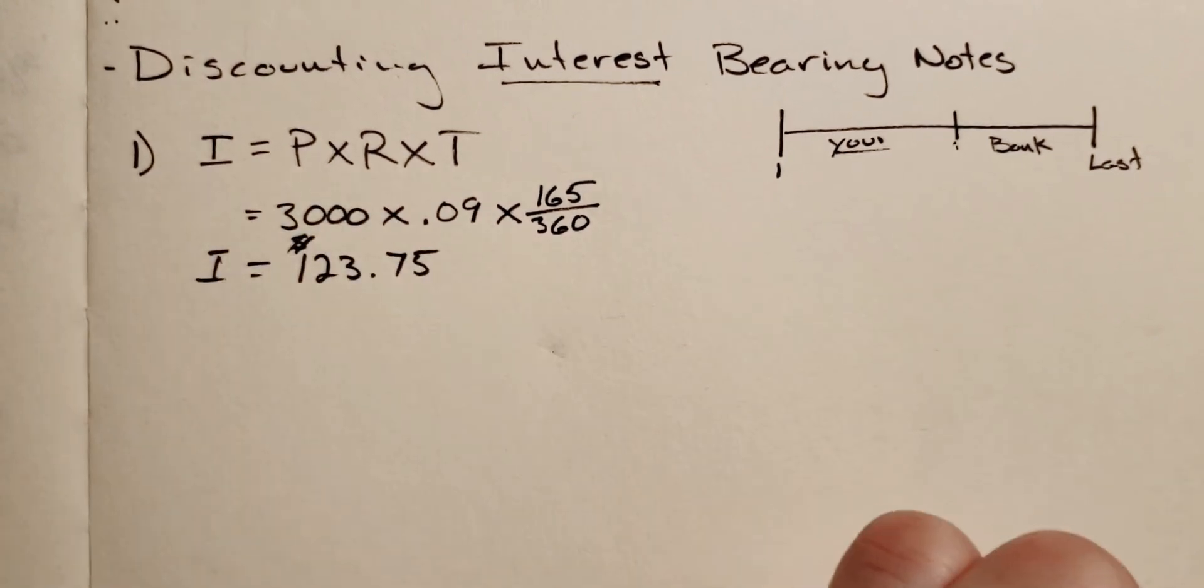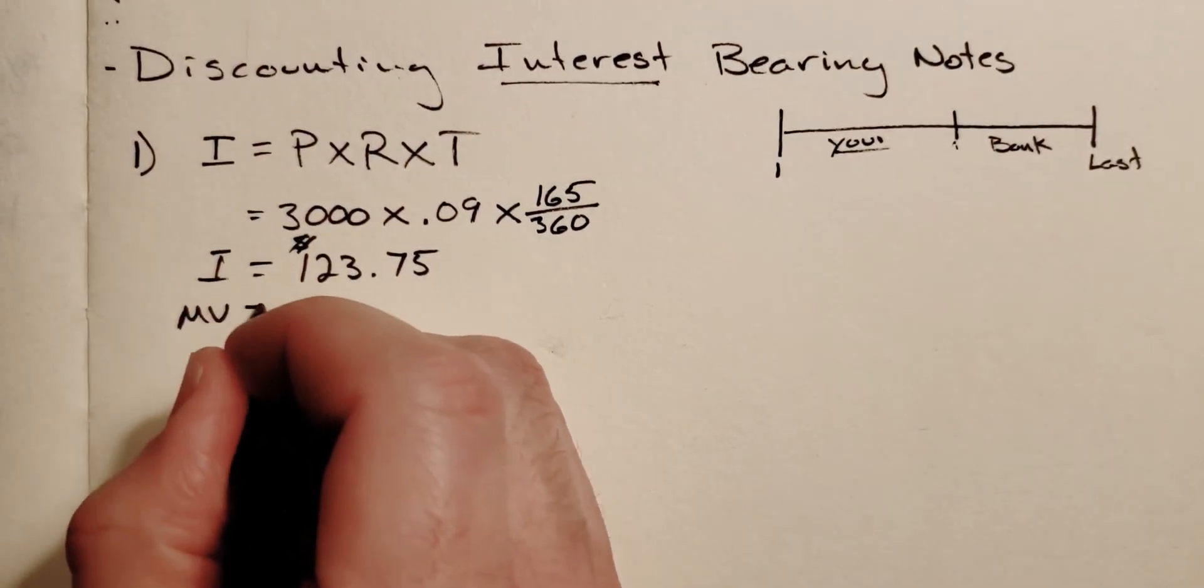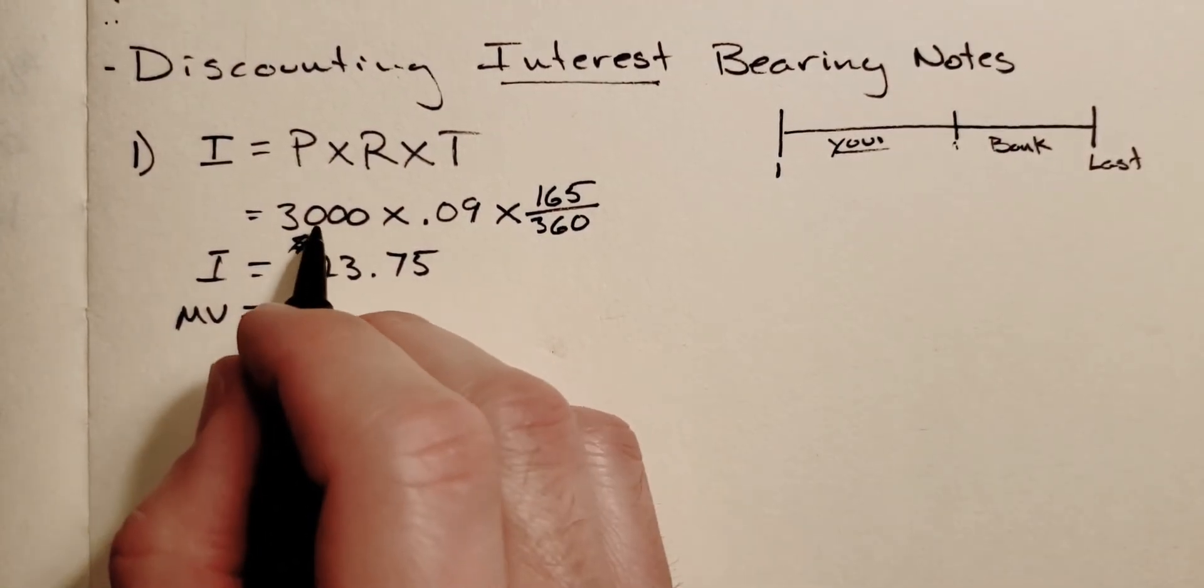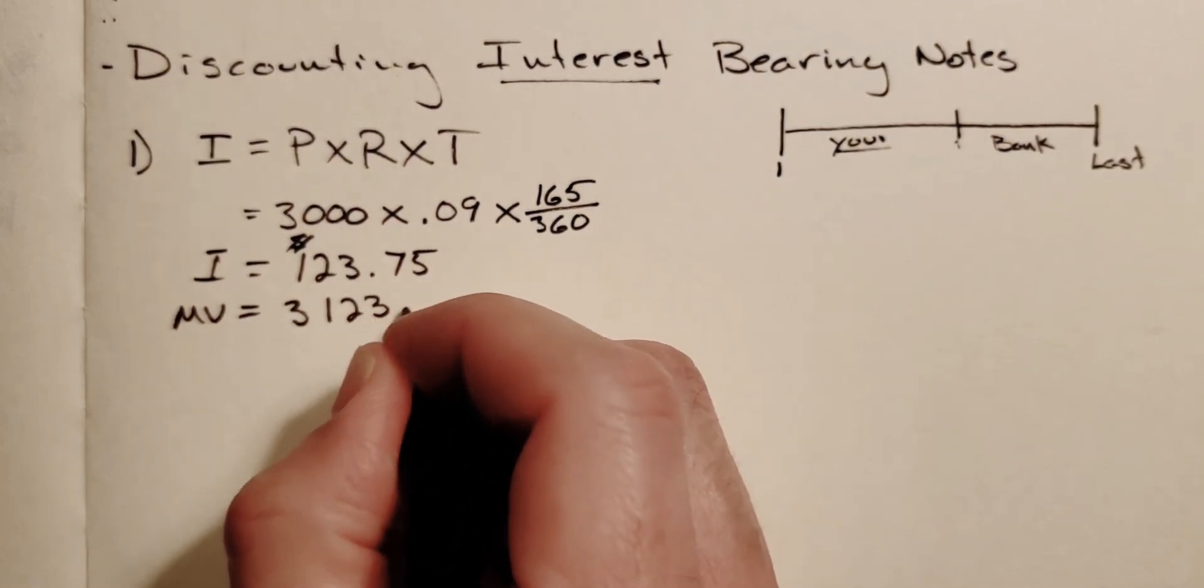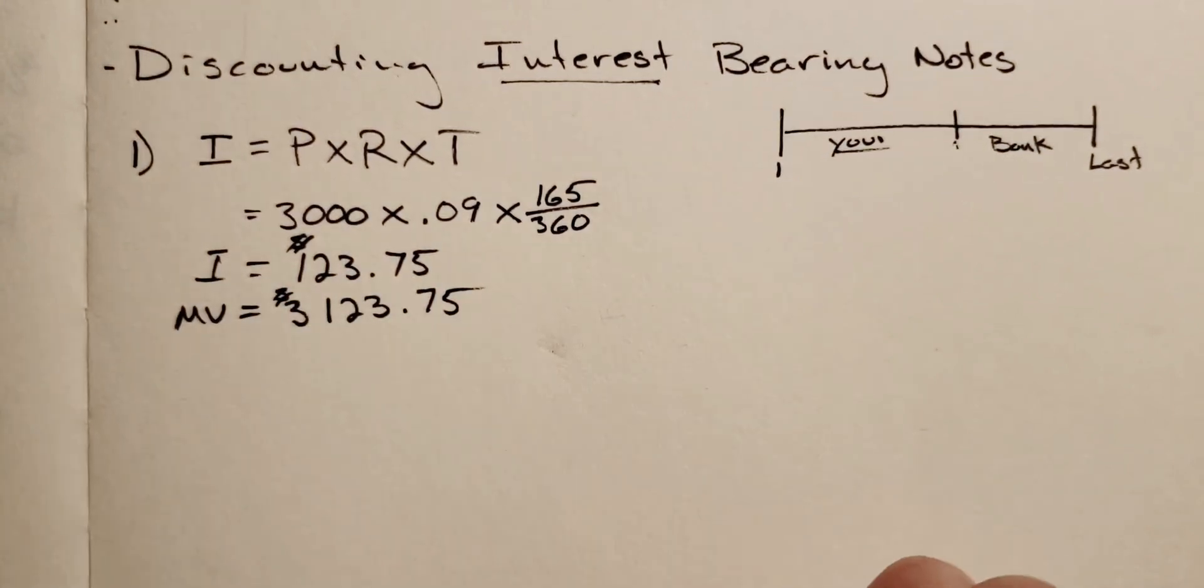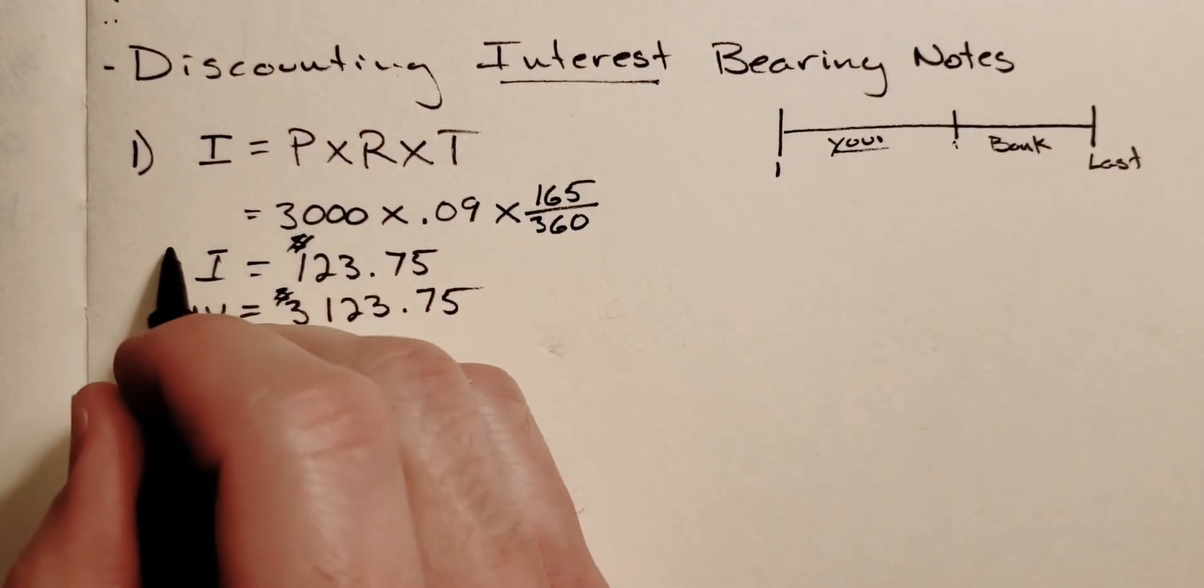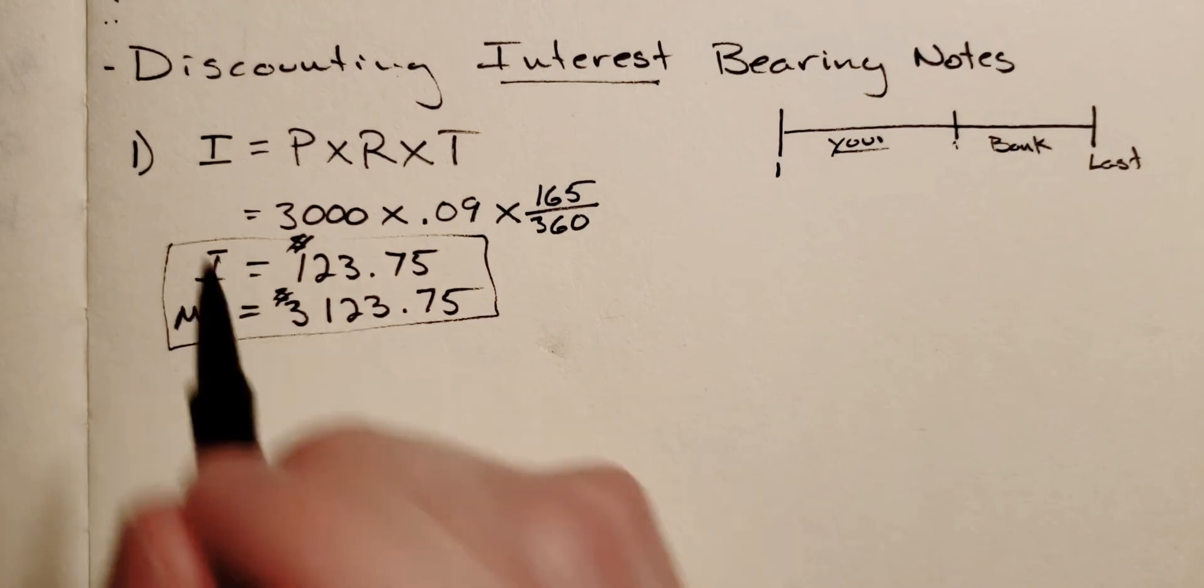So this is your interest, which means your maturity value is going to be the face value plus this. So $3,123.75 will be our maturity value. These two pieces of information is what we needed from step one.